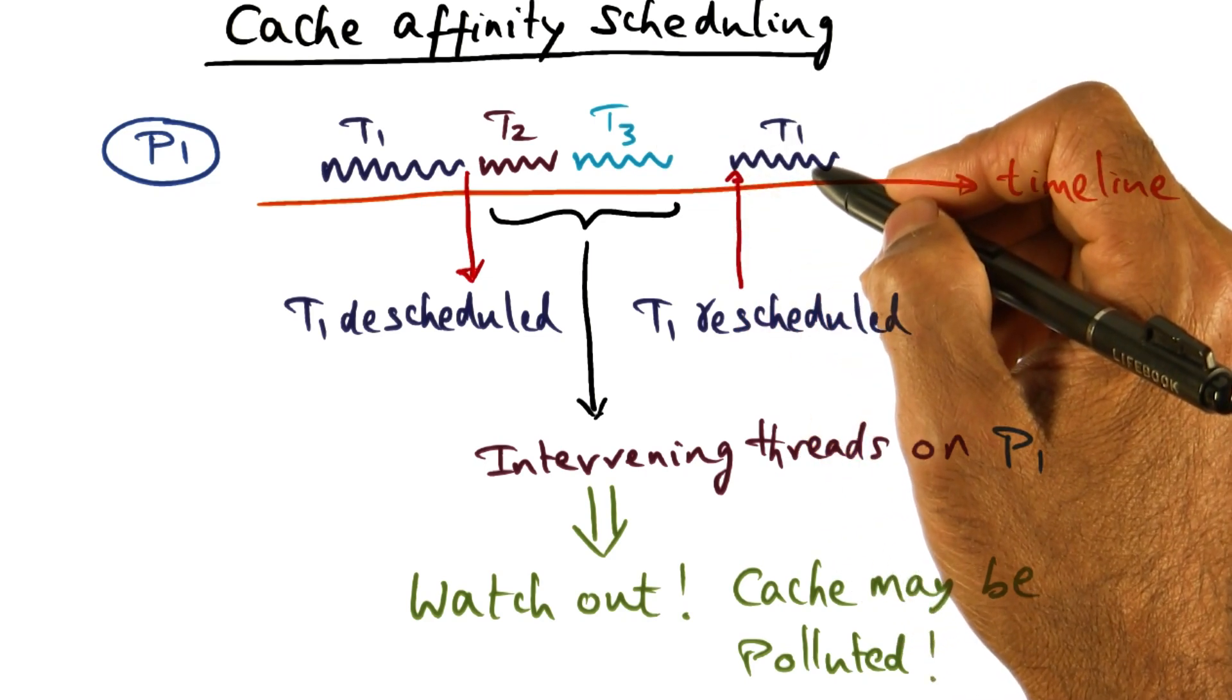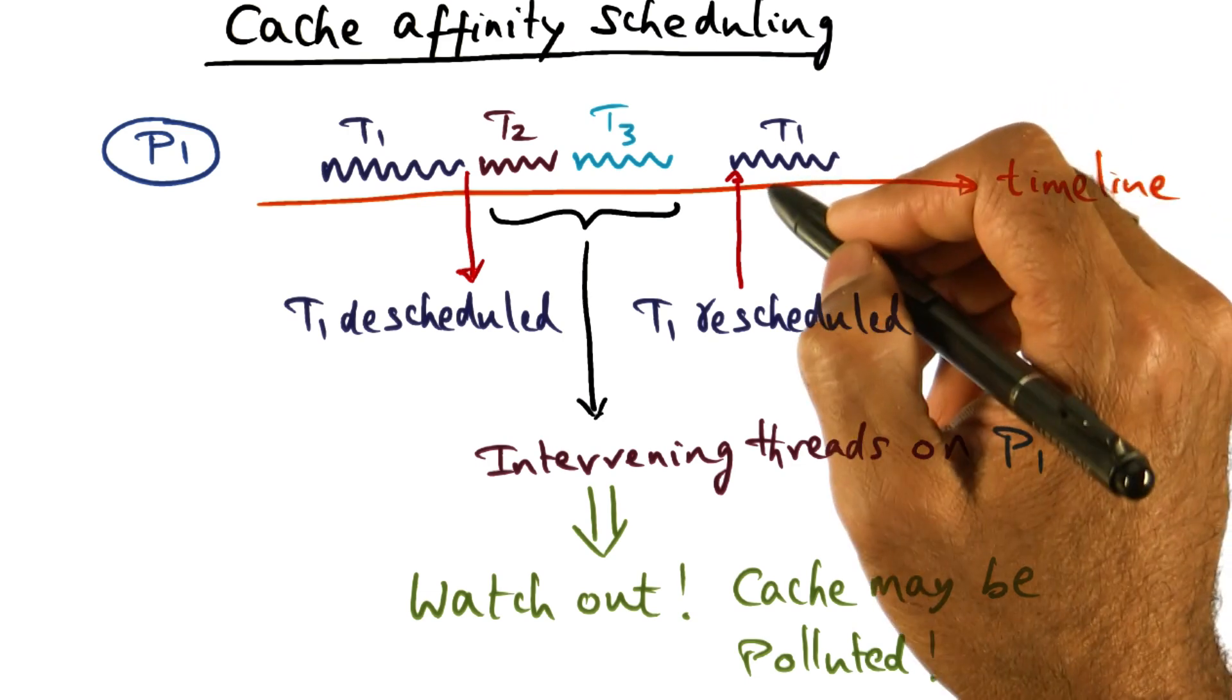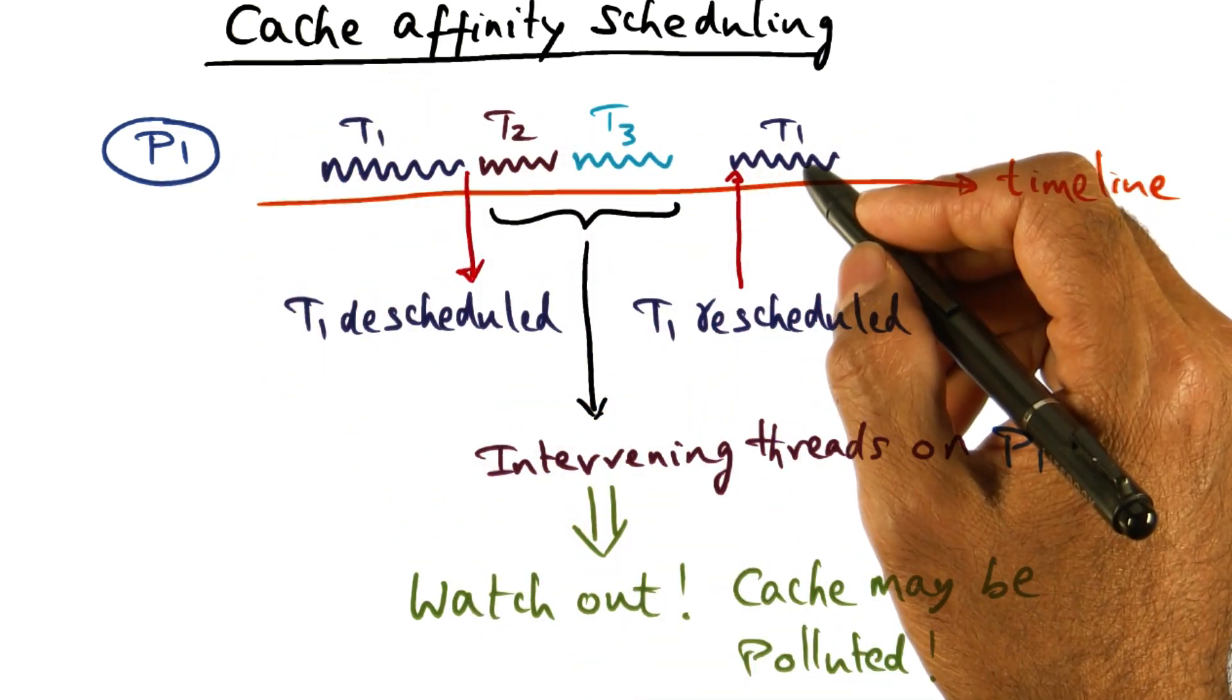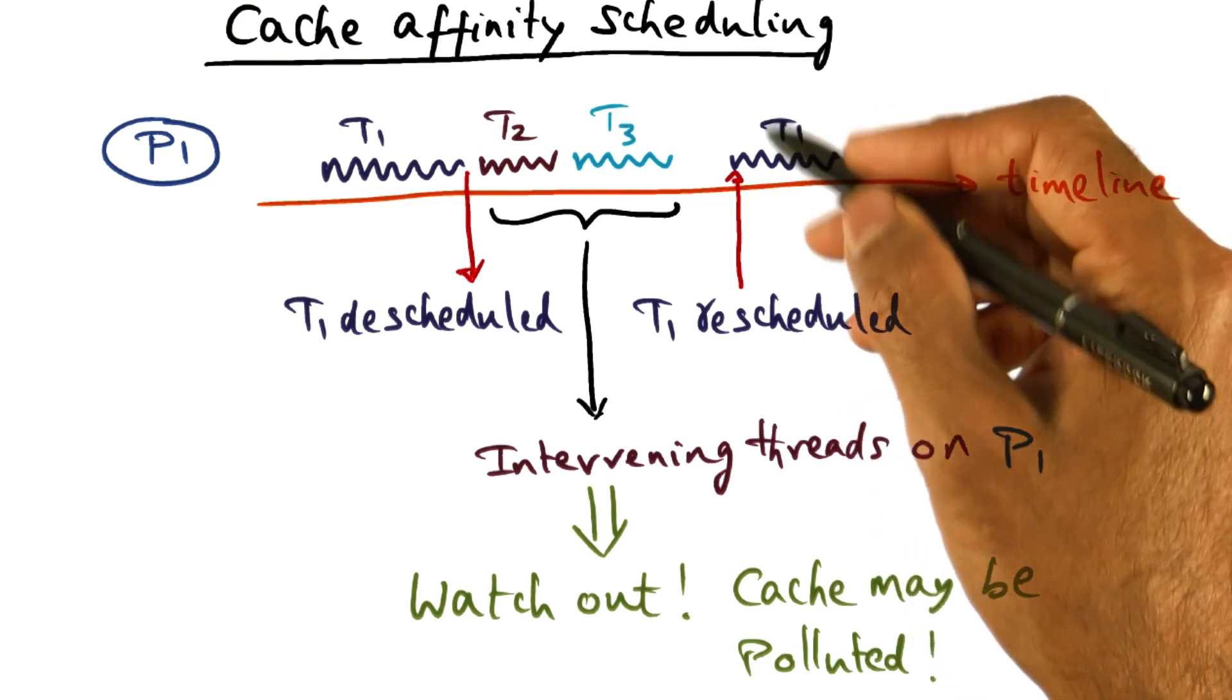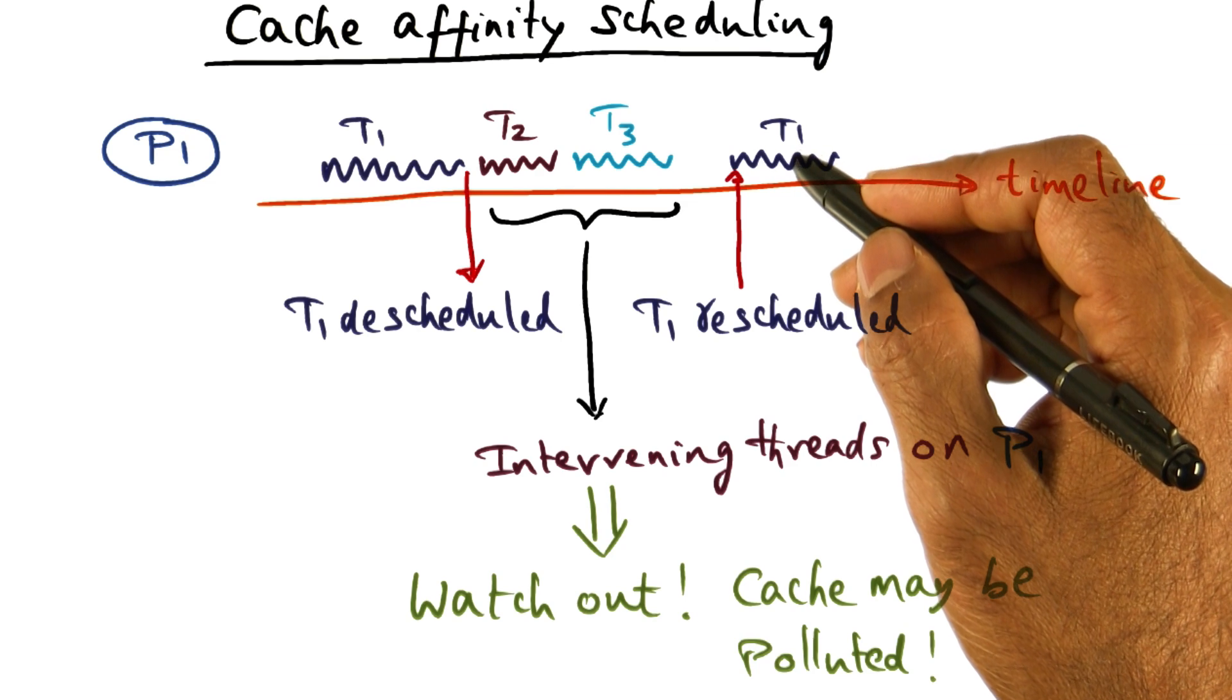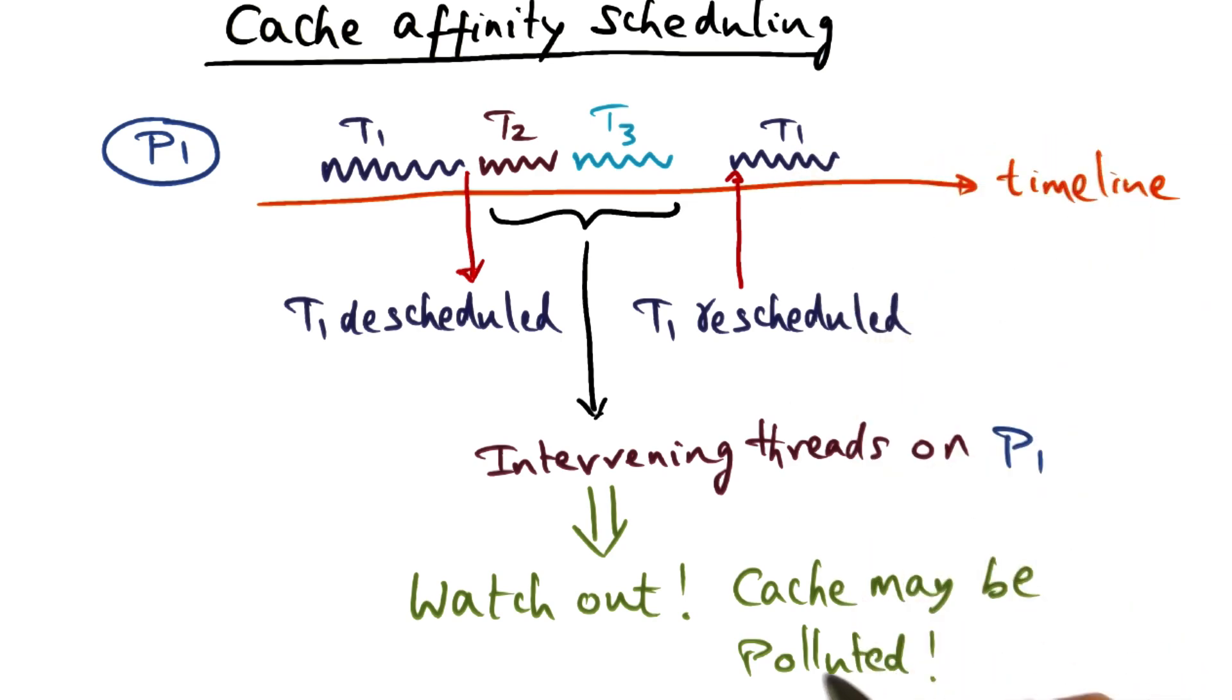And therefore, even though we made this choice that when T1 is ready to run, let's put it on P1 where it used to run before, and that way we can ensure that T1's working set is probably in the cache of processor P1, unfortunately these intervening threads may have polluted the cache. So that's something you have to watch out for.